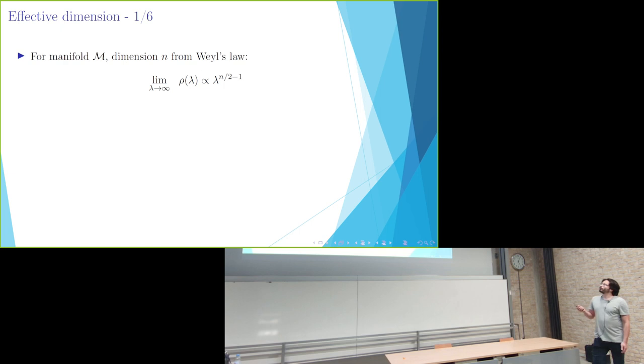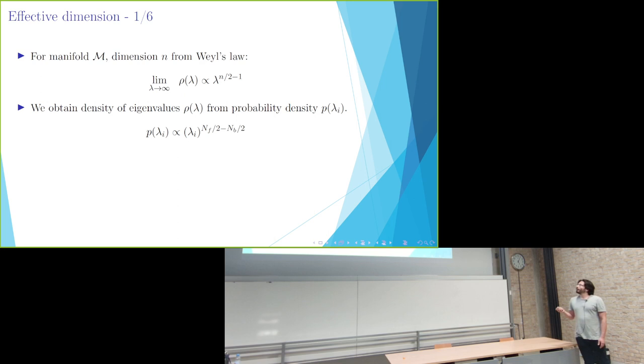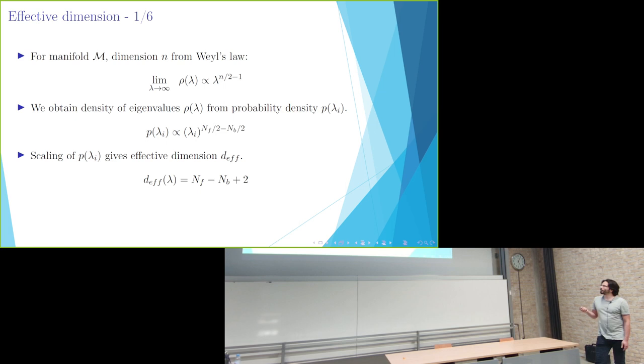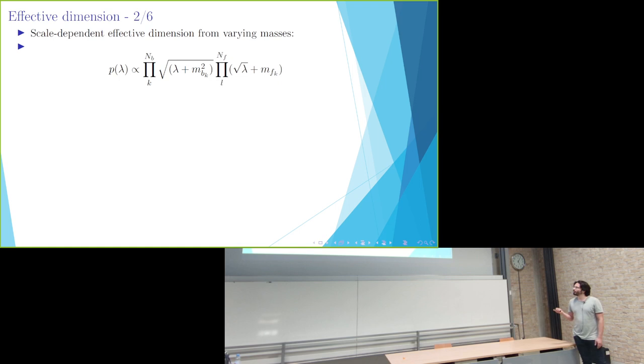Now to some results that we found for this new model. For a differentiable manifold, we could extract the dimension of that manifold from Weyl's law, Weyl-Schoening law, here written down for the density of eigenvalues. And in our model we can obtain also a density of eigenvalues from the probability density for these specific eigenvalues. And as you see here, it has some scaling that comes in terms of the number of fermionic families and families of bosonic degrees of freedom. That means that if you define an effective dimension from such a scheme, then we actually find an effective dimension in terms of these variables, which is kind of interesting because this now says that we only have a positive effective dimension if there is enough fermionic degrees of freedom, more than the bosonic degrees of freedom.